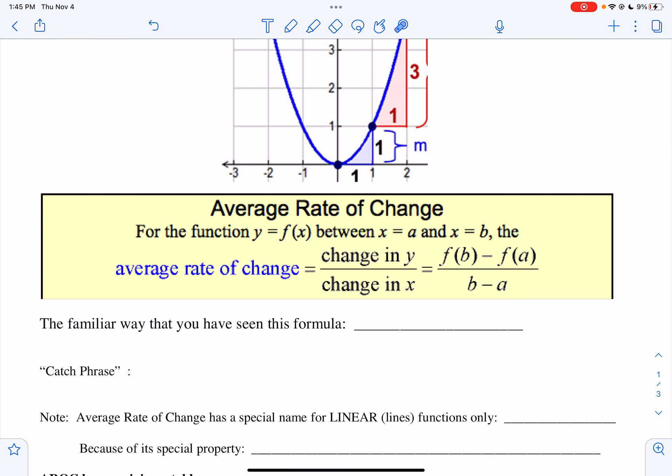By definition, the average rate of change for the function y equals f of x between x equals a and x equals b, the average rate of change is simply the change in y over the change in x, or f of b minus f of a over b minus a.